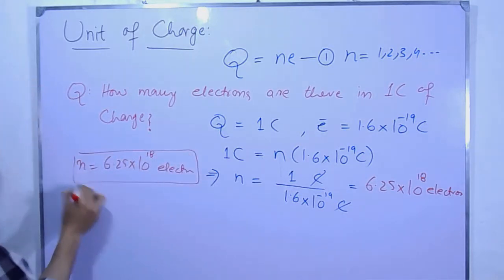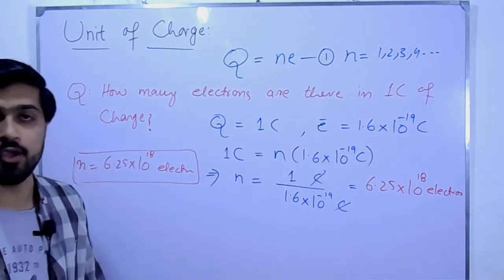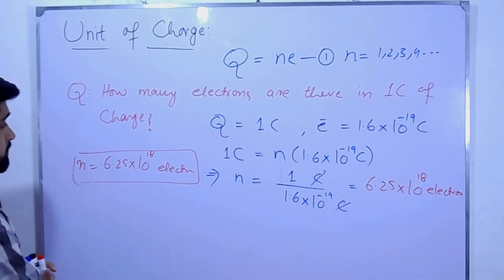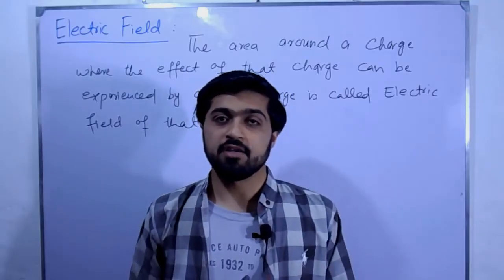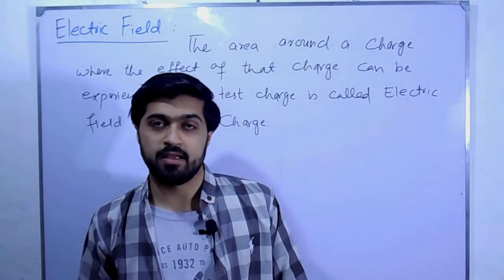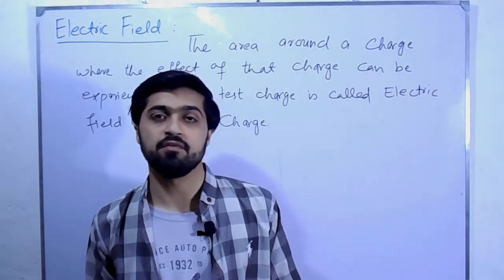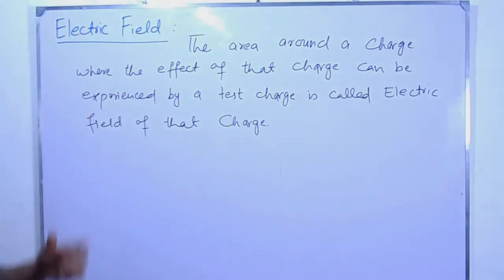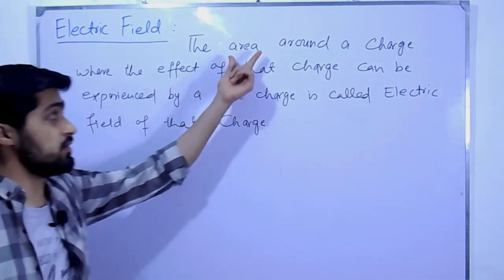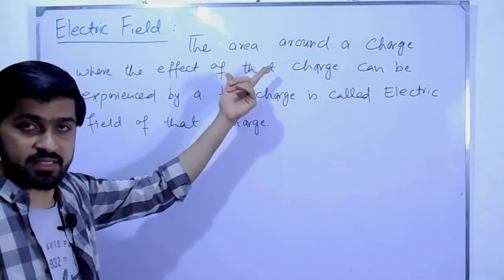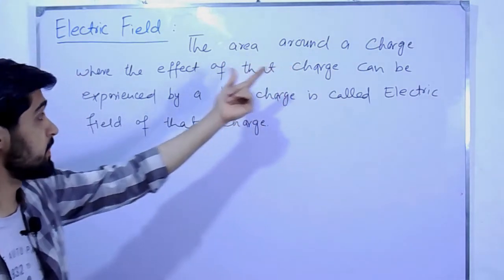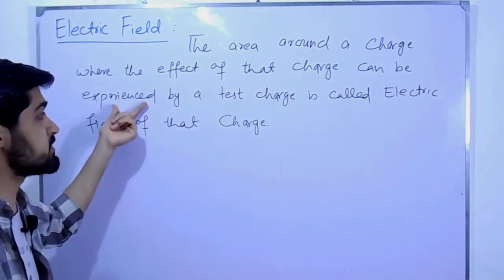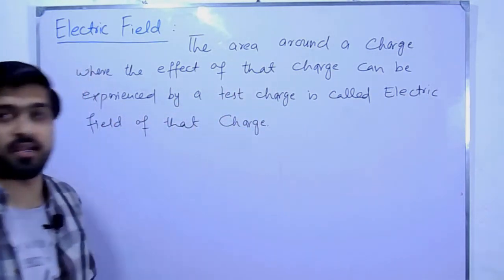So in one coulomb of charge we have 6.25×10¹⁸ electrons. Before explaining electric field intensity, let us define what electric field is. Electric field is the area, region, or vicinity around a charge where the effect of that charge can be felt or experienced by a test charge.